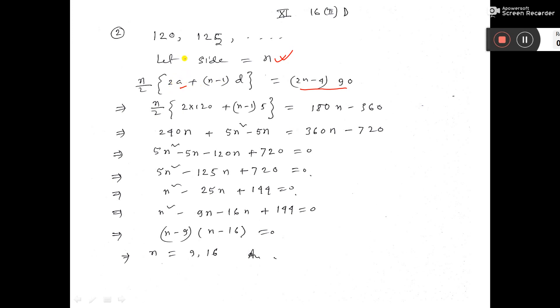Here you put the value of a is 120 and the value of common difference is 5. Then if you solve, you will get the value of n either 9 or 16. So both will be the answer.